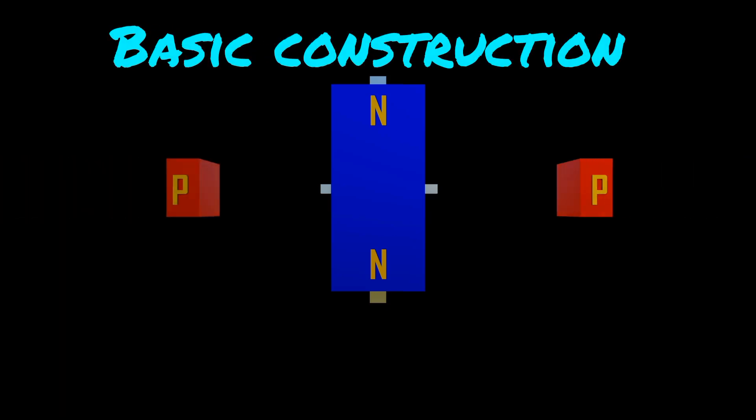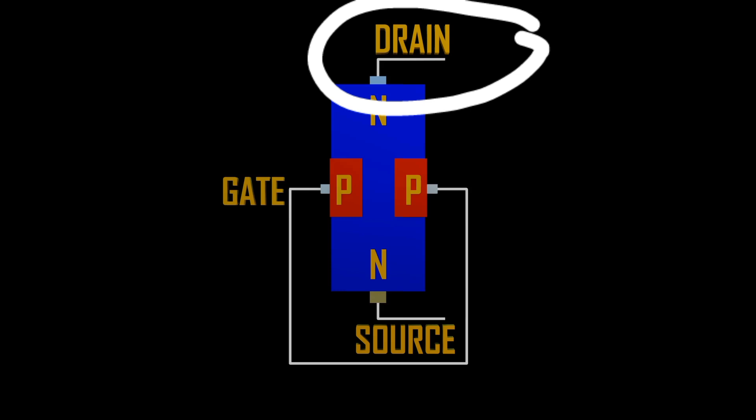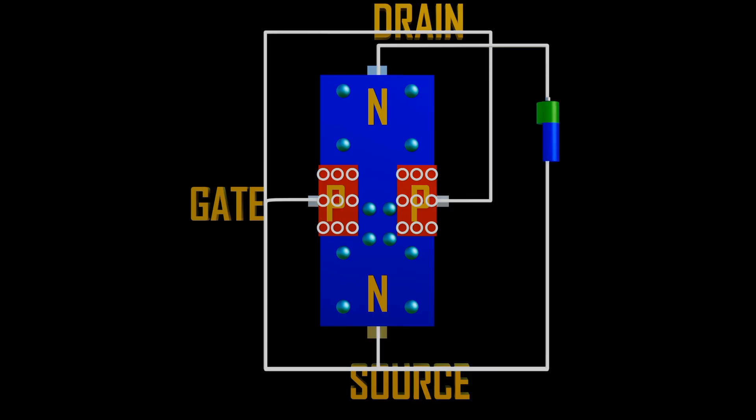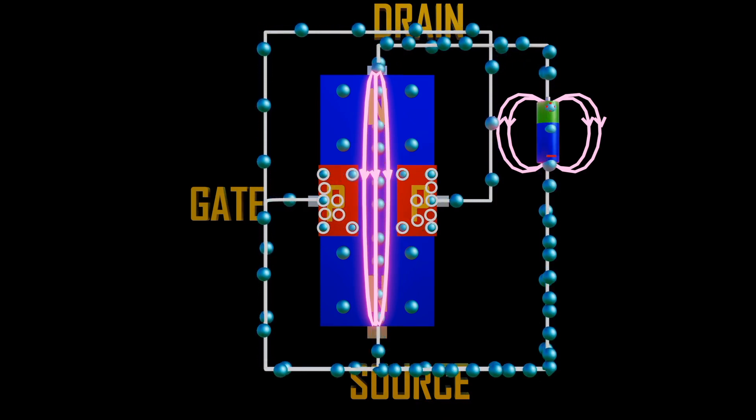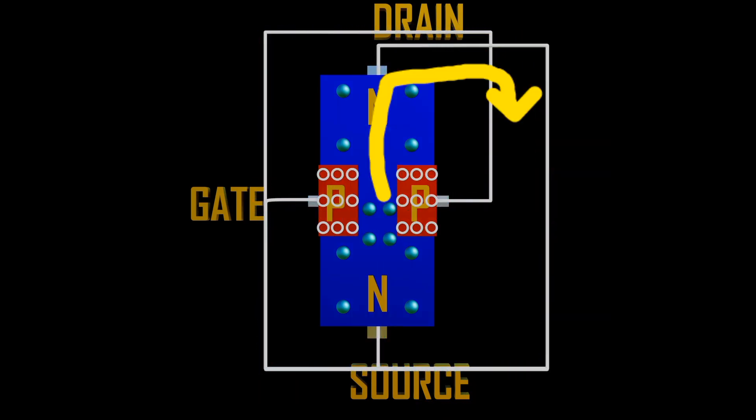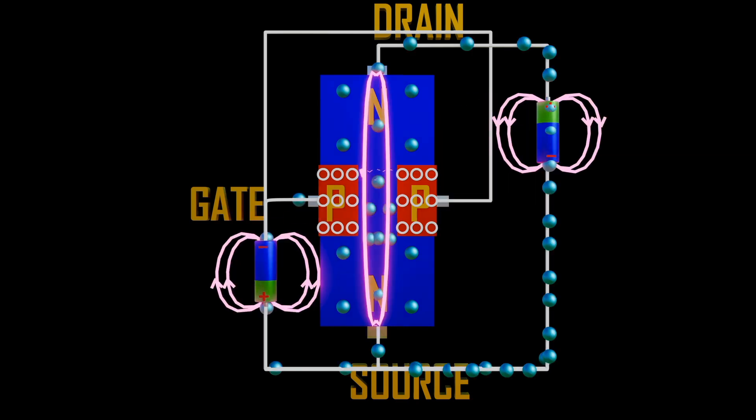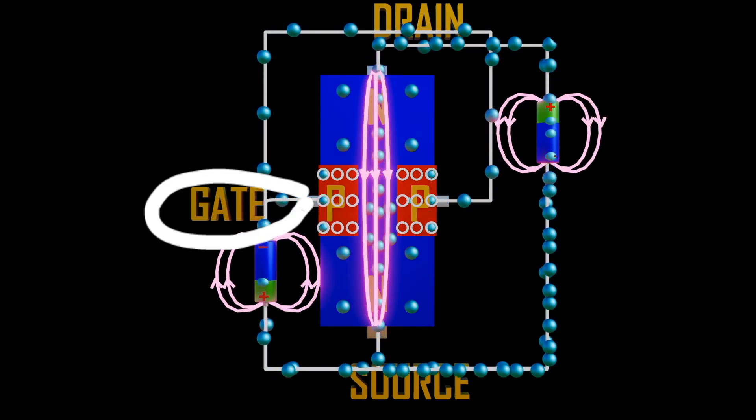Basic construction of JFET has three terminals, namely source, drain, and gate. Source is the terminal through which majority carriers enter the silicon bar. Gate is the terminal which controls drain current and is always reverse biased.